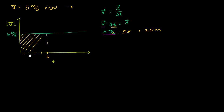But the slightly more interesting thing is that 25 meters is exactly the area under this rectangle right over here. What I'm going to show you in this video is that, in general, if you plot the magnitude of velocity versus time, the area under that curve is going to be the distance traveled — or the displacement — because displacement is just velocity times the change in time.